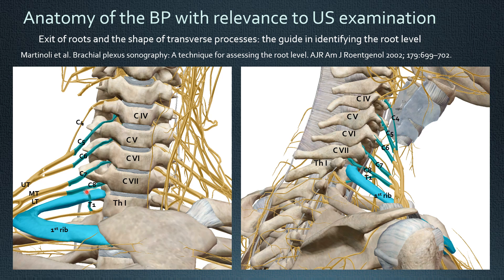The T1 root is actually not a root but a communicating branch from the first thoracic nerve. As you can see from the lateral view, the T1 and the C8 root form a V around the first rib.